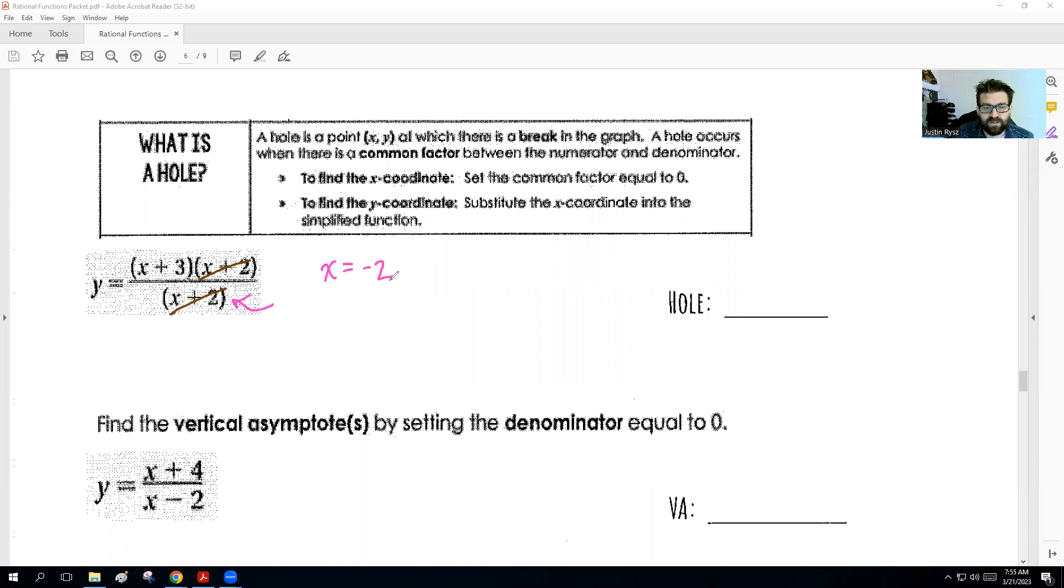Now, to find the y coordinate of that hole, we're going to substitute that number into the simplified equation. Remember, a simplified version, those canceled out, and all we're left with is just x plus 3. So if we were to take this negative 2 and plug it in to get our y, remember our y equals, y would equal negative 2 plus 3. So y would equal 1. So that means that there is a hole at negative 2, 1 on our graph.